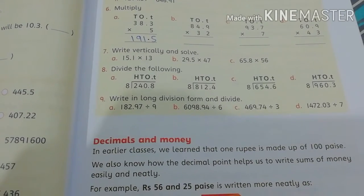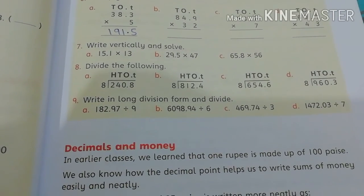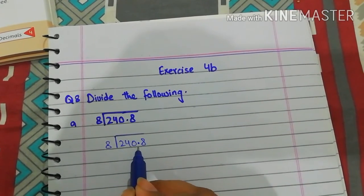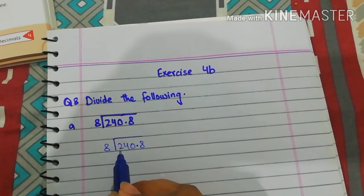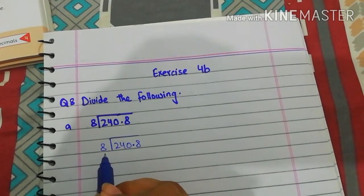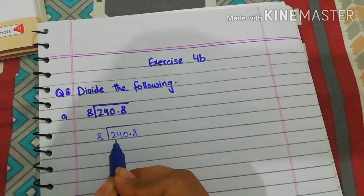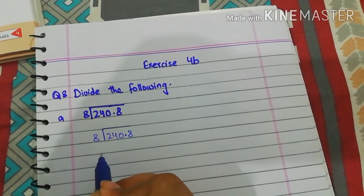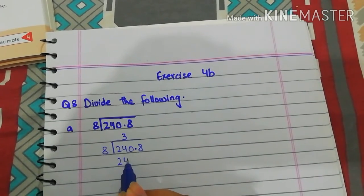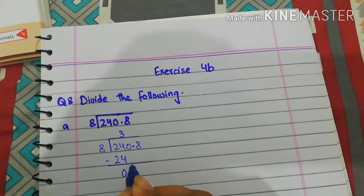Now let's move to the exercise questions. Today we will solve question number 8 and 9 of exercise 4B, page 101. Question number 8: divide the following. Part (a): 240.8 divided by 8. First, compare the leftmost digit: 2 is less than 8, so we combine to get 24. 24 is greater than 8; 8 threes are 24. So 24 minus 24, remainder 0.